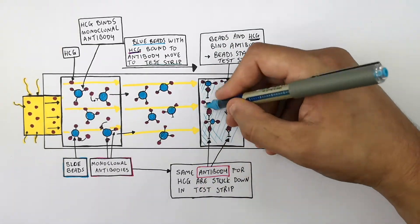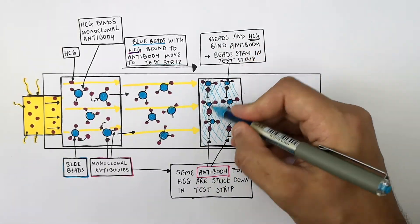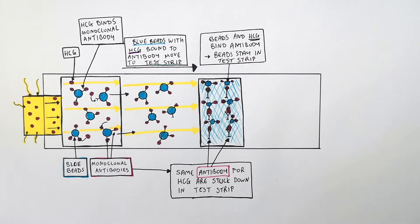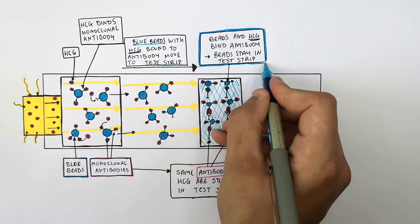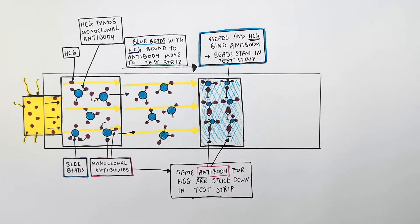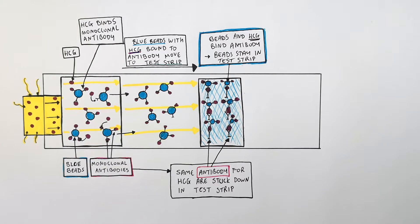These blue beads are going to turn the test strip blue, indicating the woman is pregnant. This is the first of two lines that need to appear for her to confirm she's pregnant, and this line will turn blue as you can see on the pregnancy test.